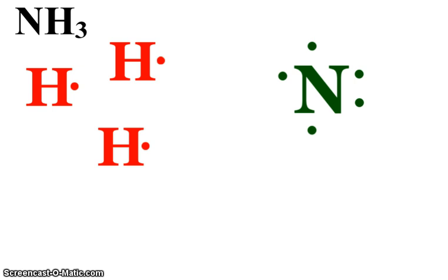Alright. So nitrogen, you see, has five valence electrons, three electrons that it would really like to share. And hydrogen, of course, has the one.